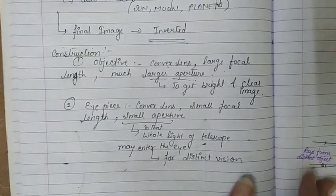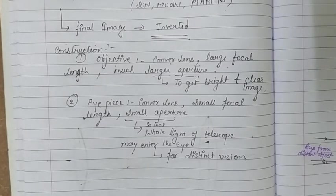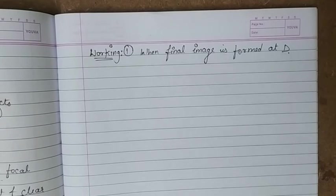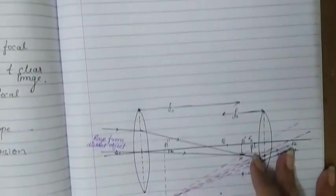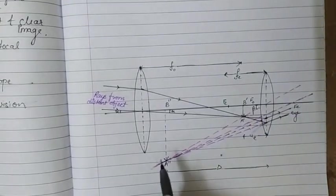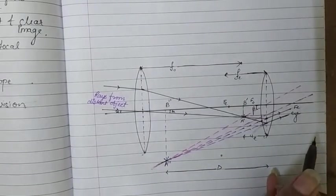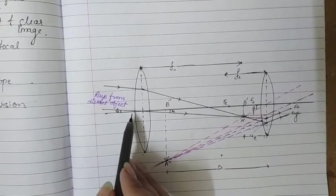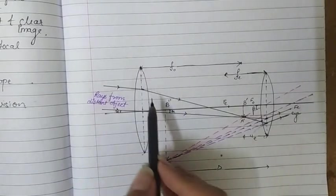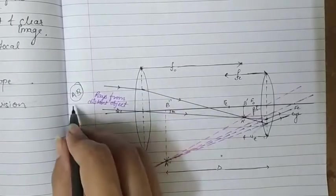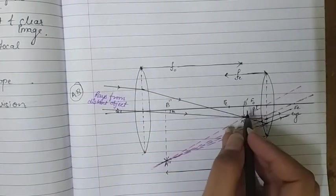In the working of this telescope there are two cases. In Case 1, the final image is formed at D, the least distance of distinct vision. The rays coming from the distant object, or infinity, are taken as parallel. After refraction from the objective, these parallel rays converge to give an image A'B'.